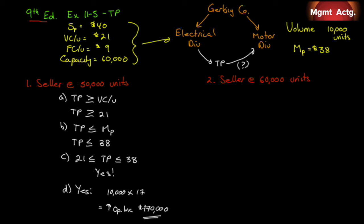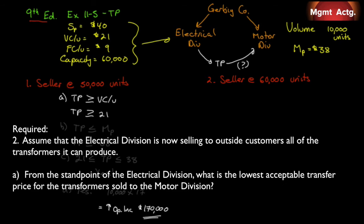Now let's go to Requirement 2, which assumes the electrical division is now selling to outside customers all of the transformers it can produce — full capacity. We'll go through the same scenarios.